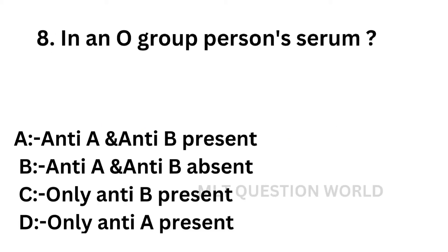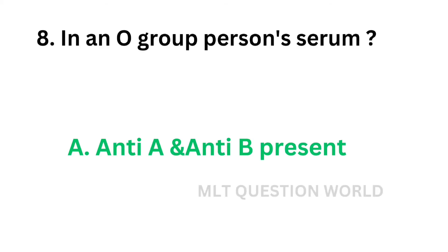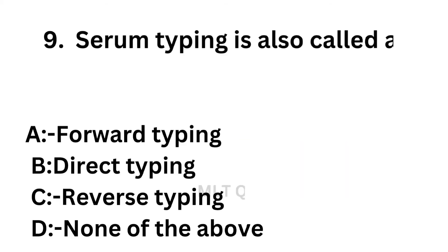Question number 8: In an O group person's serum — option A: Anti-A and anti-B present, option B: Anti-A and anti-B absent, option C: Only anti-B present, option D: Only anti-A present. The correct answer is option A, anti-A and anti-B present. In O group individuals there is no A or B antigen, so anti-A and anti-B are present.